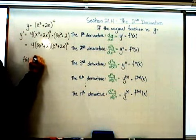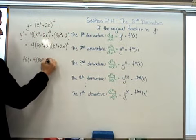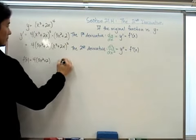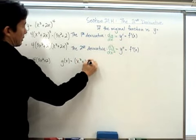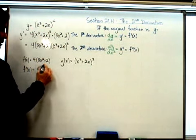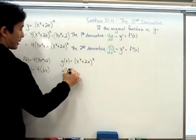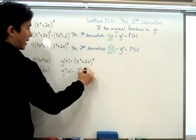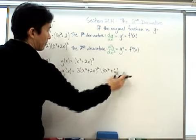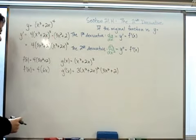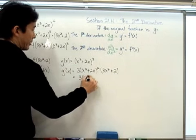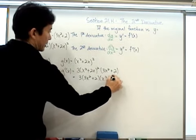So if I let f(x) equal 4 times 3x squared plus 2, and g(x) equal x to the 3rd plus 2x raised to the 3rd power, then f'(x) would be 4 times 6x, which is 24x. For g'(x), I have to use the chain rule: that's 3 times x to the 3rd plus 2x raised to the 2nd power, times 3x squared plus 2. Simplified, g'(x) is 3 times 3x squared plus 2 times x to the 3rd plus 2x quantity squared.